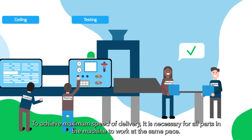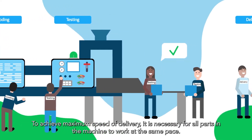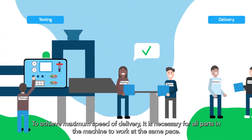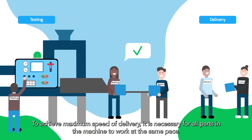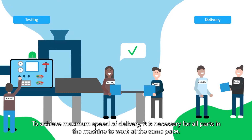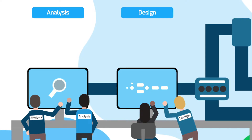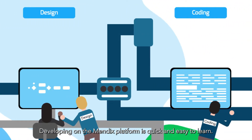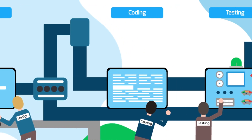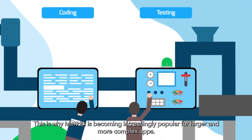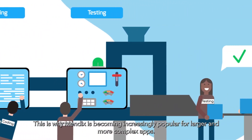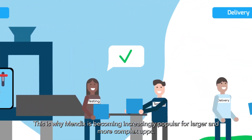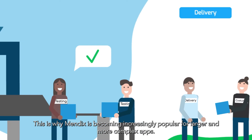To achieve maximum speed of delivery, it is necessary for all parts in the machine to work at the same pace. Developing on the Mendix platform is quick and easy to learn. This is why Mendix is becoming increasingly popular for larger and more complex apps.